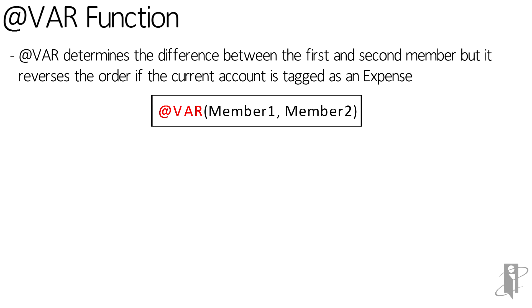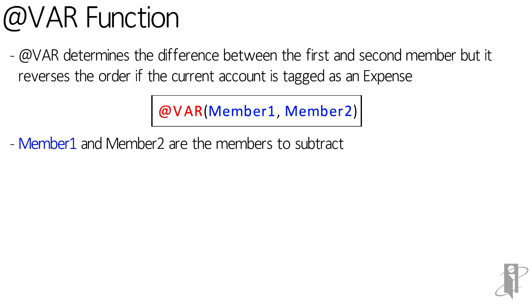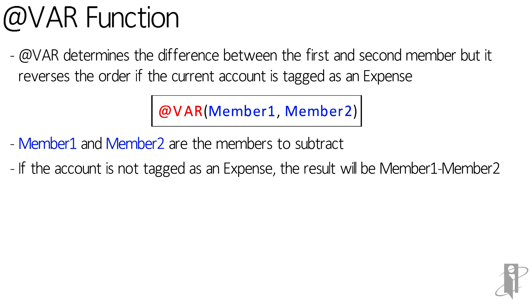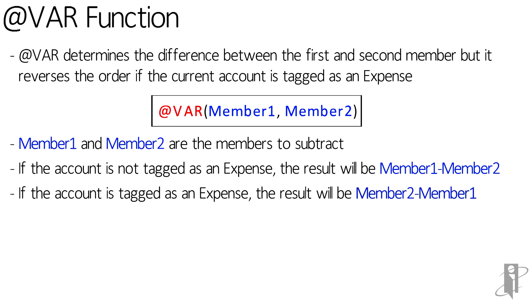The syntax for the ATVAR function is simply ATVAR, the member that you normally want to be higher than the second one, and then the other member — member one followed by member two. However, if you go into the outline and tag an account as an expense, instead of doing member one minus member two, it will do member two minus member one. So for all accounts except those tagged as expense, it does the first member minus the second one, but for accounts tagged as expense, it's member two minus member one.